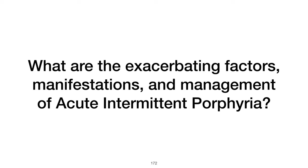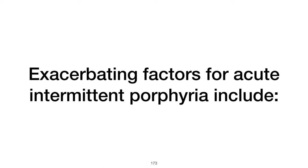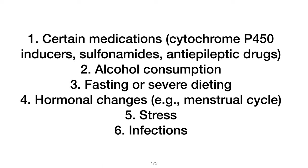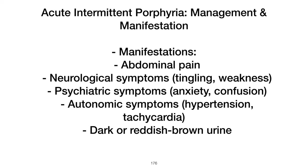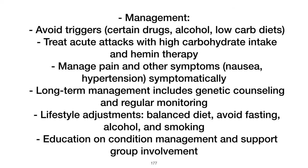What are exacerbating factors, manifestations, and management strategies for acute intermittent porphyria? The exacerbating factors include certain drugs, fasting, and hormonal changes. Manifestations can include abdominal pain, neurological symptoms, and psychological symptoms. Management involves avoiding triggering factors, administering glucose or carbohydrates, and using heme therapy in severe cases.